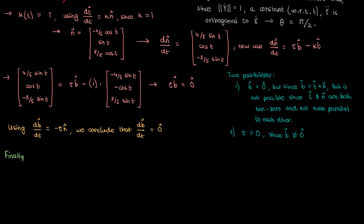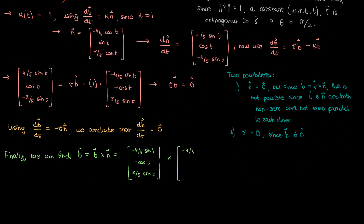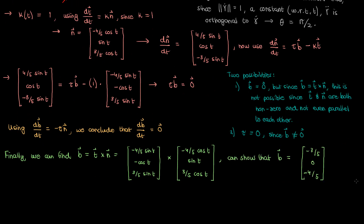Finally, using the formula for the binormal vector — the cross product of t and n — the result is a constant vector with components negative 3/5, 0, and negative 4/5.